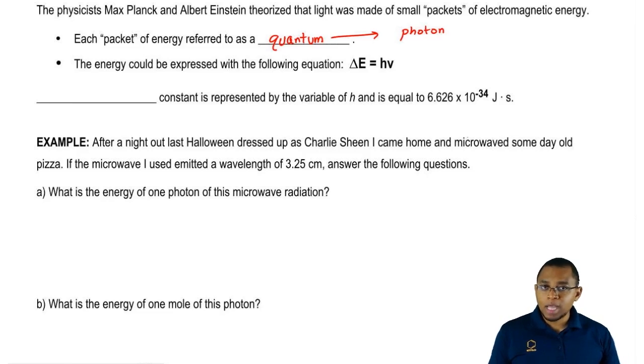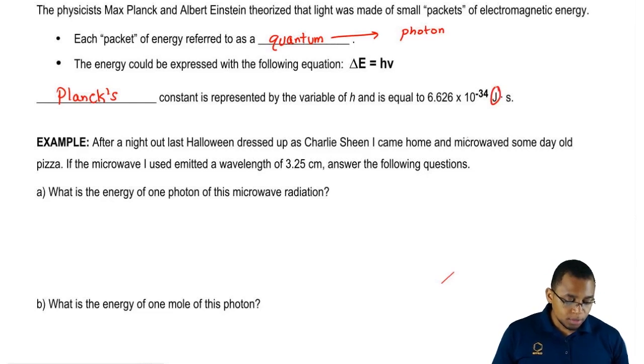Now h is a new constant that we have to become familiar with. We're going to say h is referred to as Planck's constant. We're going to say that it's 6.626 times 10 to the negative 34 joules times seconds. Remember, joules are just another form of energy.